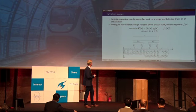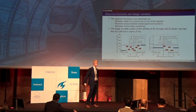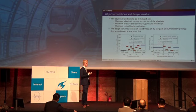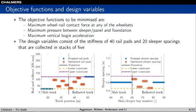In this study we consider three objective functions that we want to minimize: the maximum wheel-rail contact force at any wheelset, the maximum pressure between the sleeper panel and the foundation, and the maximum vertical bogie acceleration. These three objective functions make this an optimization problem of multi-objective type.